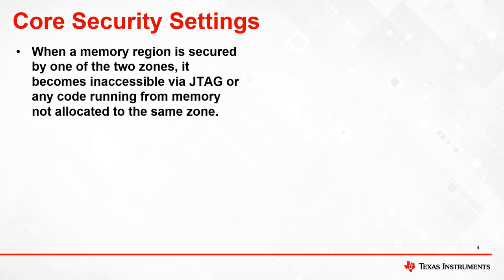Data reads or writes in secure memory regions are only allowed by code that is secured by the same zone. For example, code running from a memory region secured by zone 2 cannot read memory that is secured by zone 1, but it can perform reads on any memory that is secured by zone 2 or memory that is not secured by either zone.